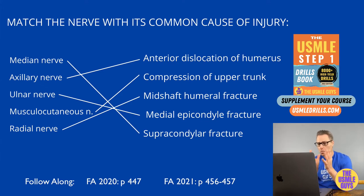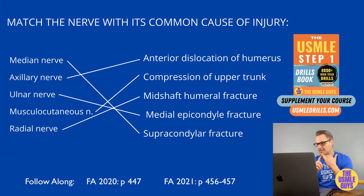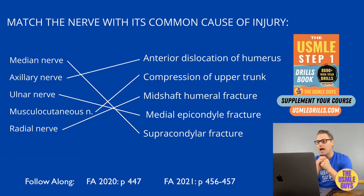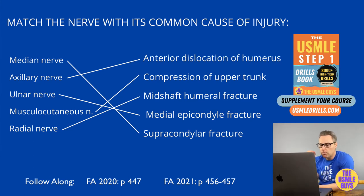With a median nerve injury, sensory loss includes numbness over the thenar eminence and median distribution of the hand. Motor deficits include weak forearm pronation, wrist flexion and abduction, and weak finger flexion with preserved DIP flexion of the ring and little fingers. Also look for a weakened thenar eminence causing weak pincer grip, weak thumb opposition, and an overall decrease in grip strength.